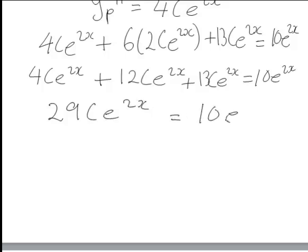That will just become 29C e to the 2x equal to 10 e to the 2x. And so from that we can find that C is equal to 10 over 29.